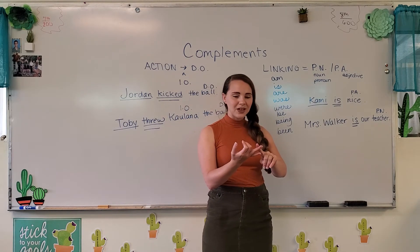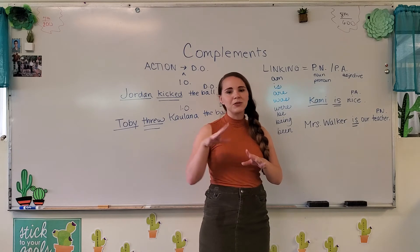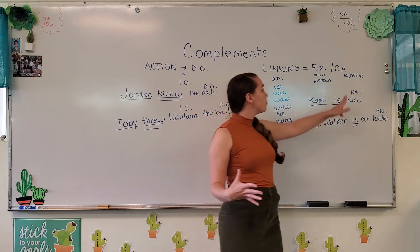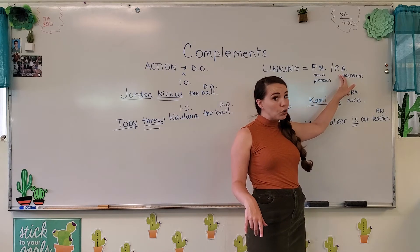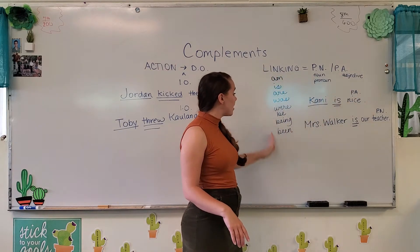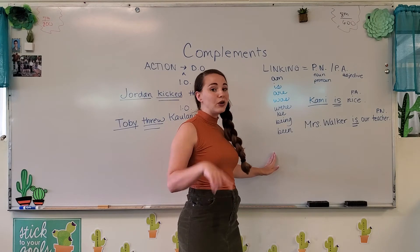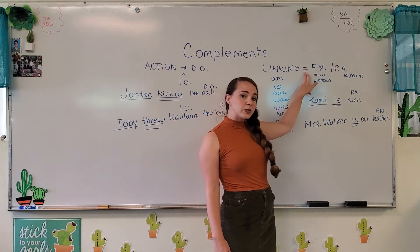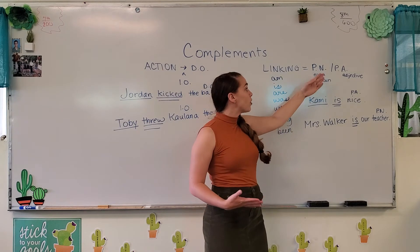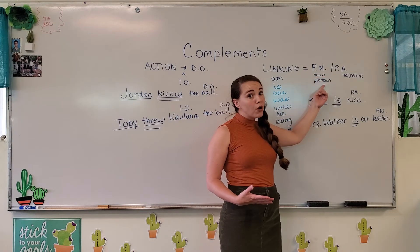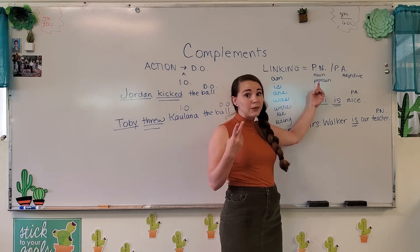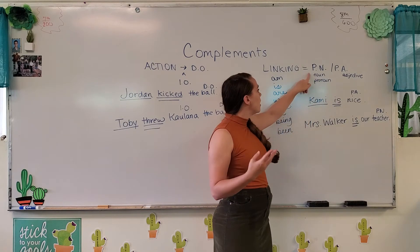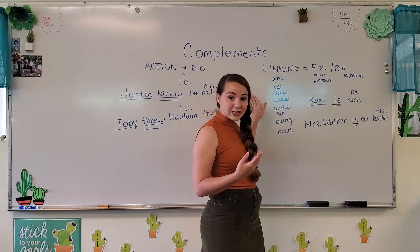Now, taste, feel, smell, sound, look, appear, become, seem, grow, remain, stay — those are actually used for predicate adjectives, which are new. So I'm going to stick with just am, is, are, was, were, be, being, been for now just to illustrate. Do you see how I put an equal sign here? That's because a predicate nominative, which is a noun or pronoun — a person, a place, a thing, or an idea — is equal to what the subject is.